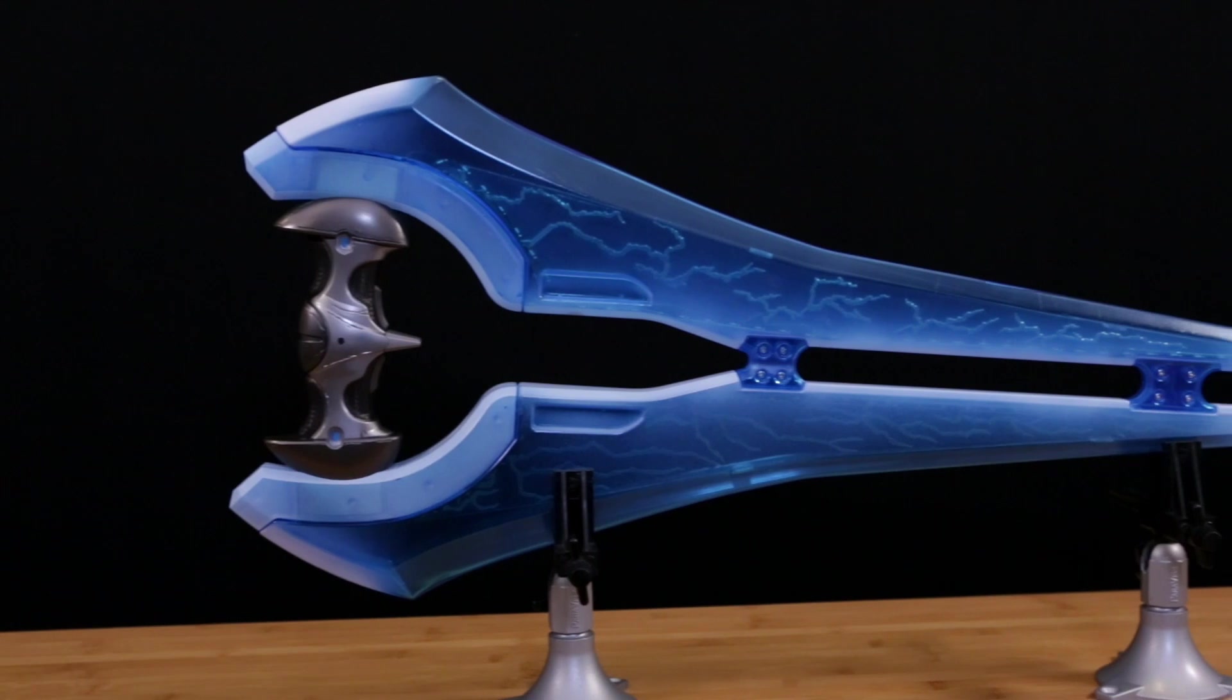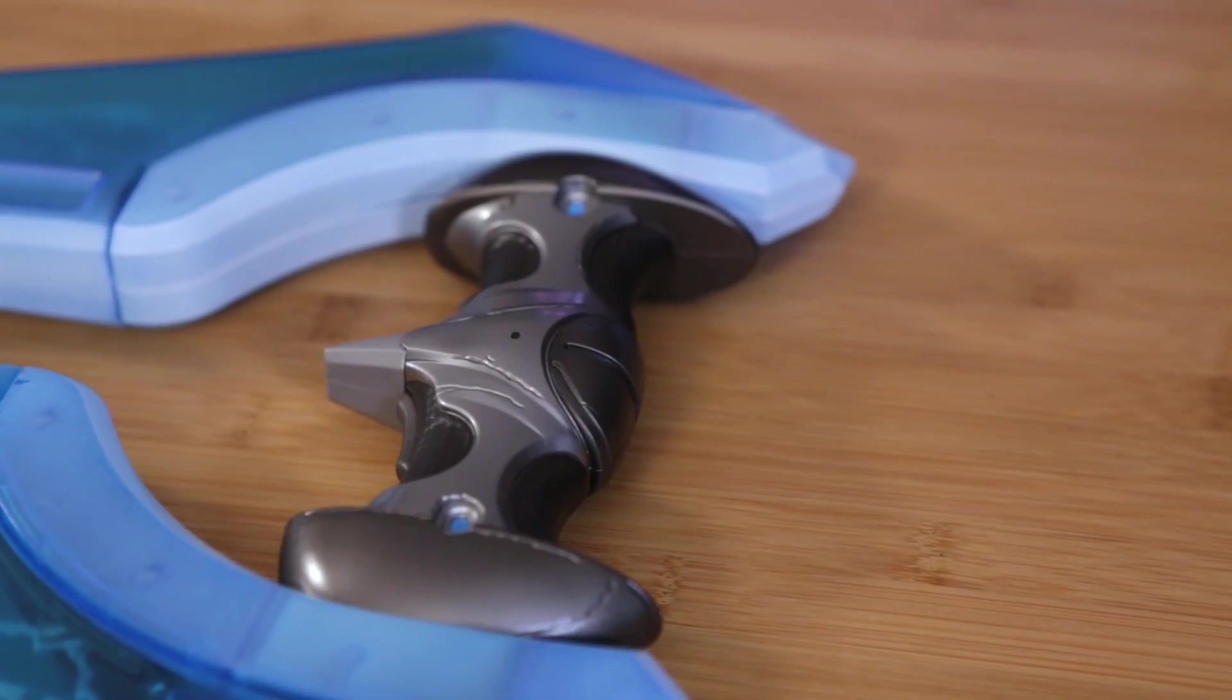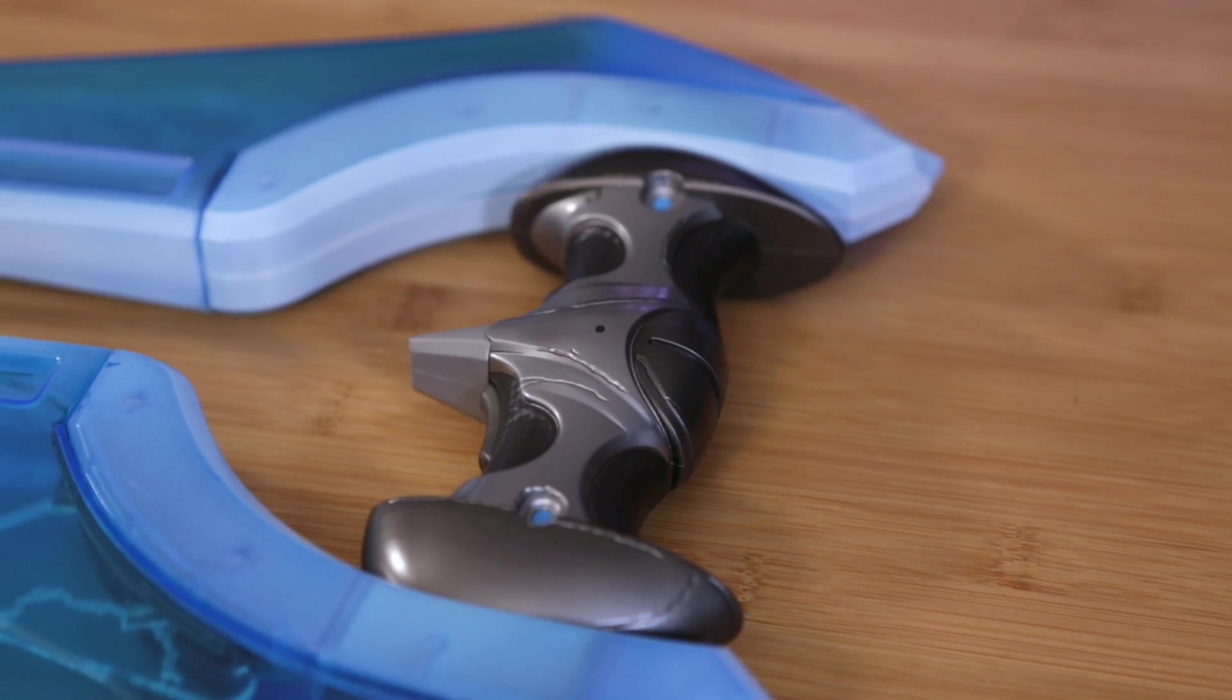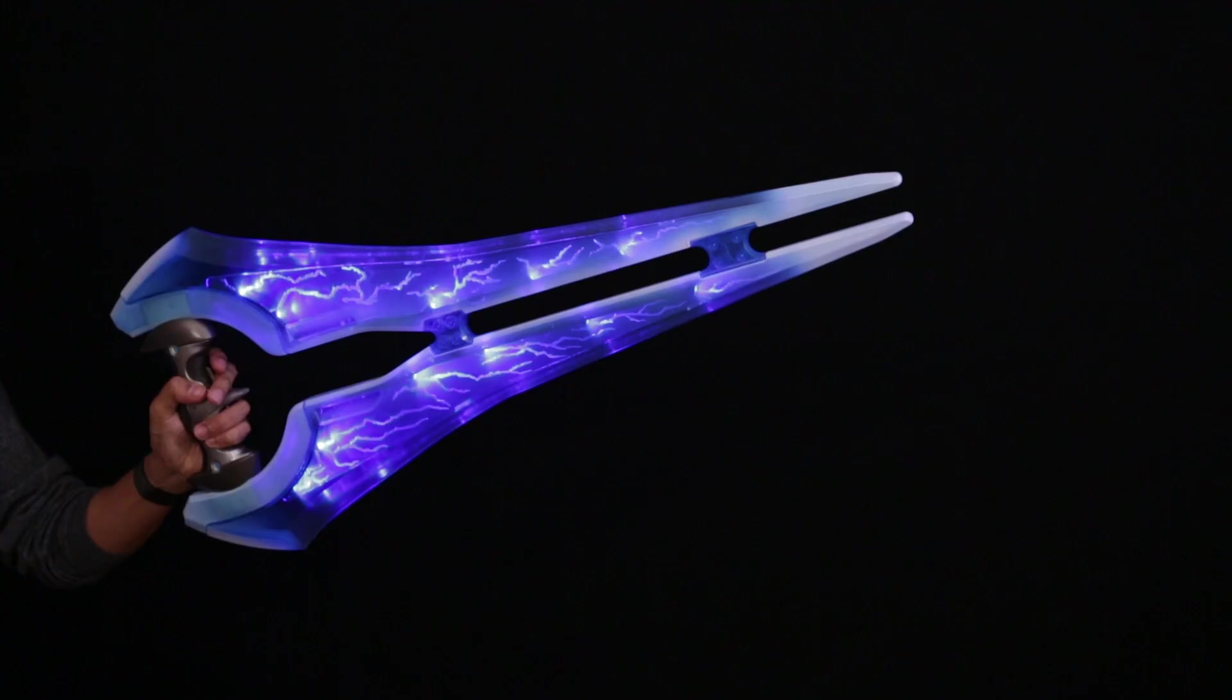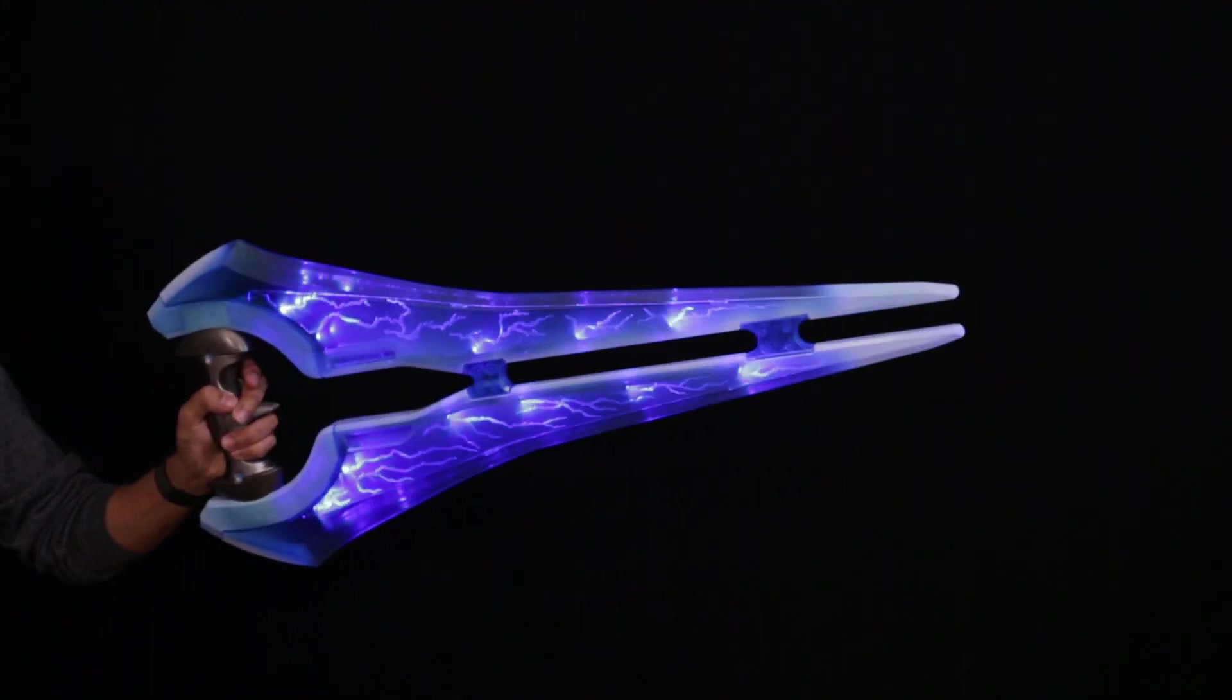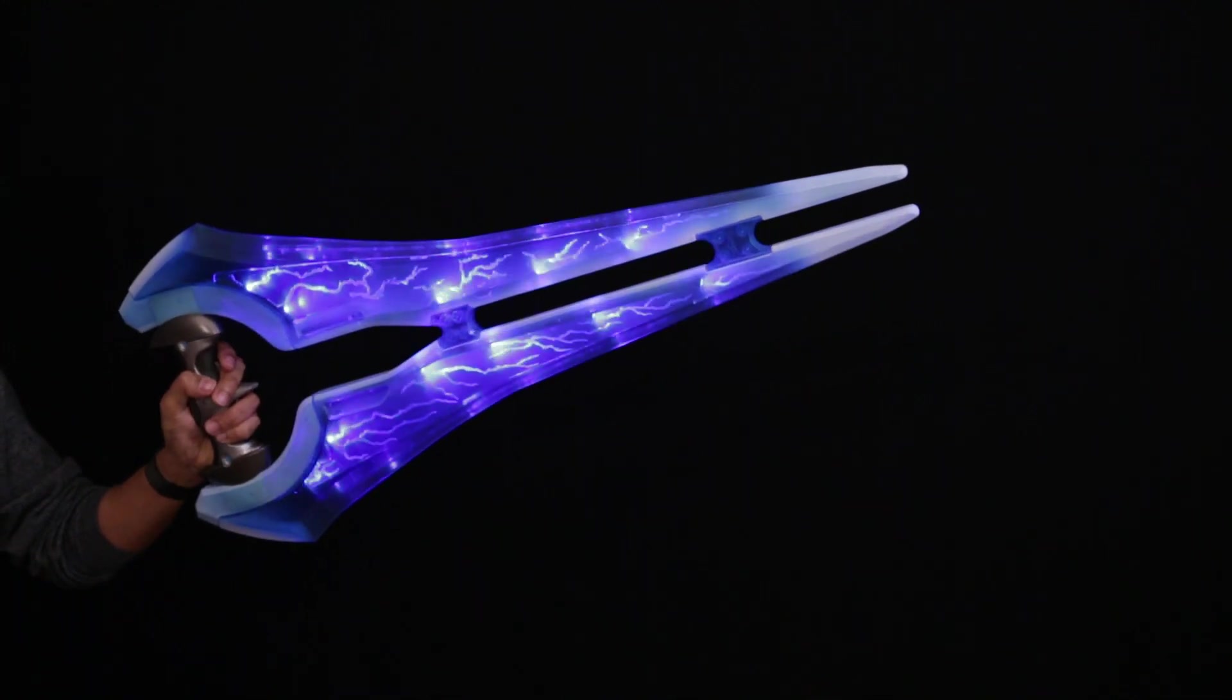This is of course the infamous Energy Sword from Halo. This cosplay prop is actually made by Mattel and officially licensed by Microsoft. You can find these exclusively at GameStop and I think it's actually a pretty decent piece of kit. It does actually light up but it kind of leaves a lot to be desired. It only has 11 LEDs so the lighting in this thing is kind of underwhelming.